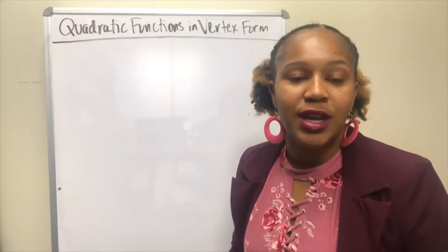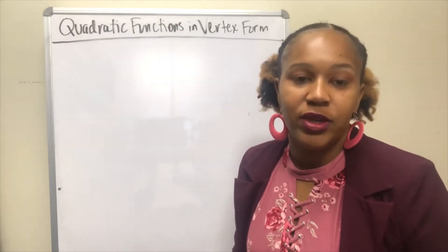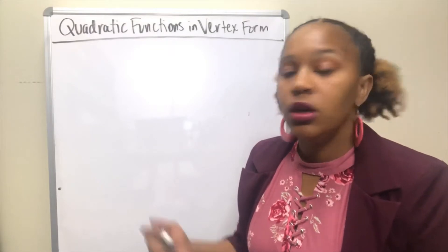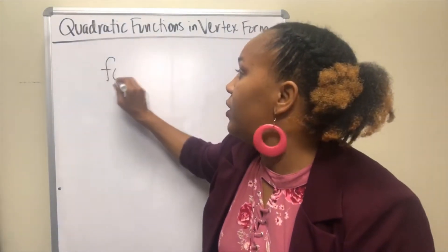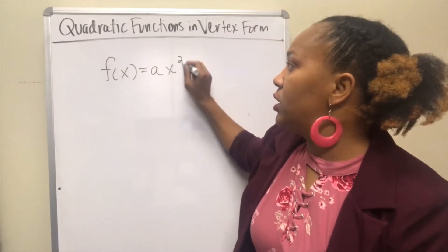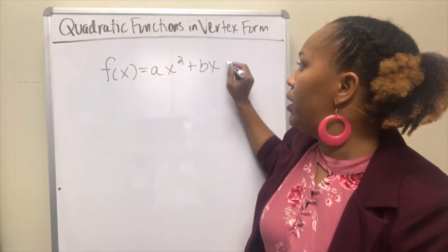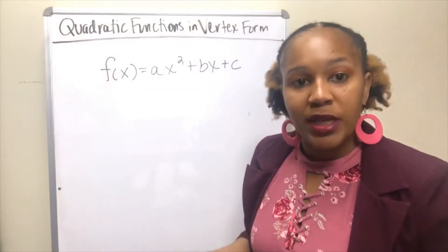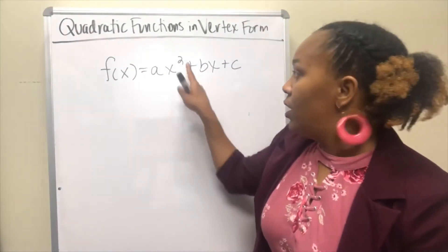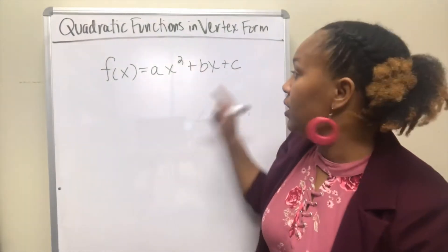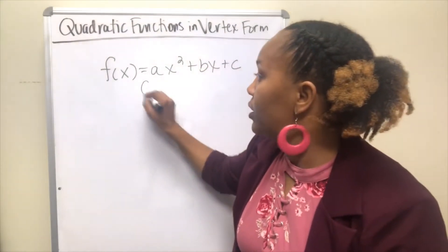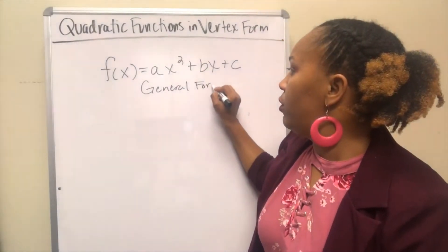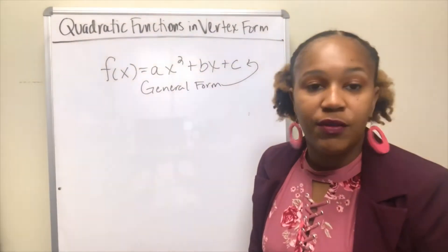In this video we are going to talk about quadratic functions in vertex form. A quadratic function is a function of the form ax squared plus bx plus c. What makes it quadratic is the highest exponent being two. This form is called the general form, or sometimes standard form, of a quadratic function.